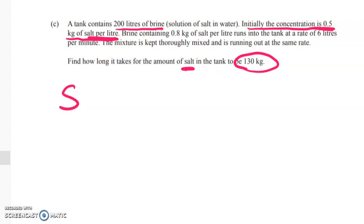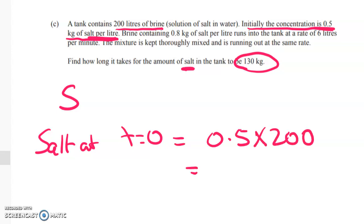It's not brine, except that the salt is inside the brine, is contained in the brine. So if we know that the initial concentration is 0.5 kilograms of salt per litre, then we know that salt at t equals 0 is equal to 0.5 times 200, which is 100 kilograms of salt. So what's the next thing that we know?